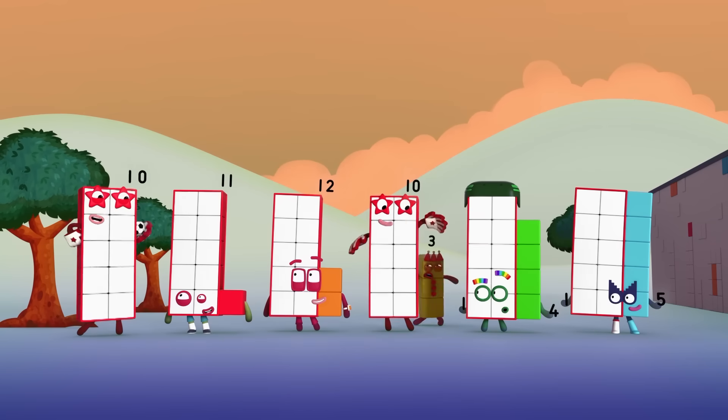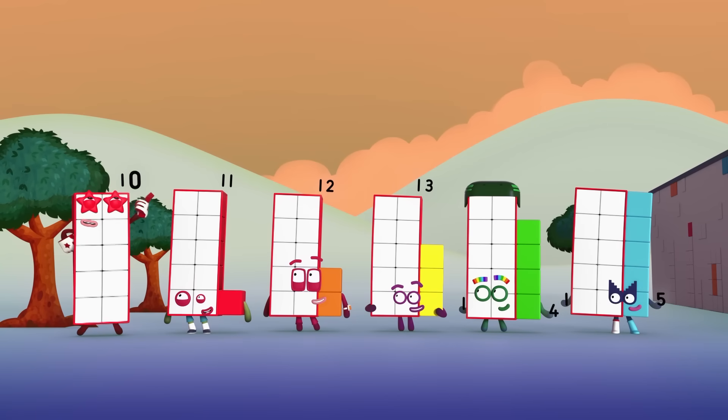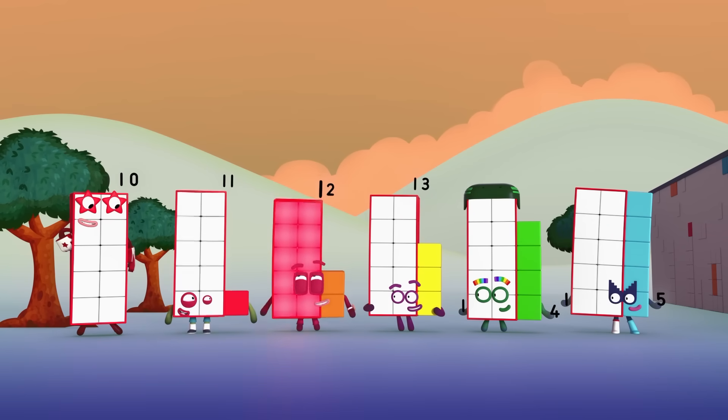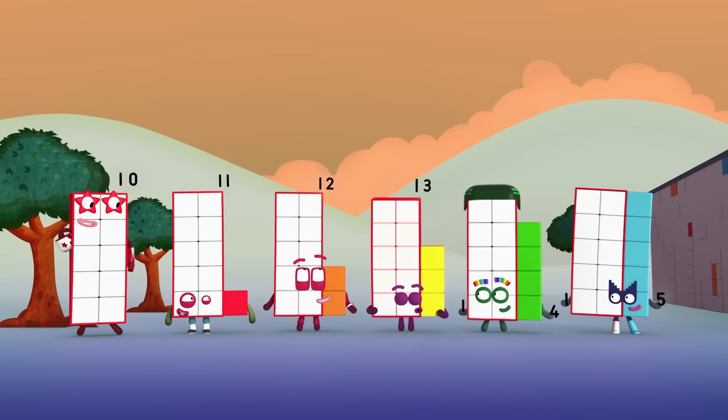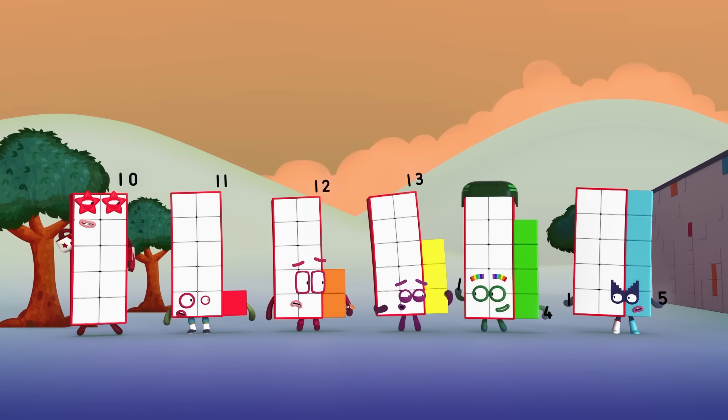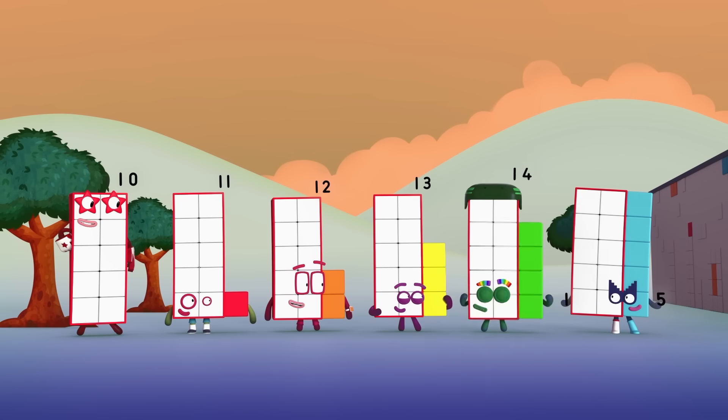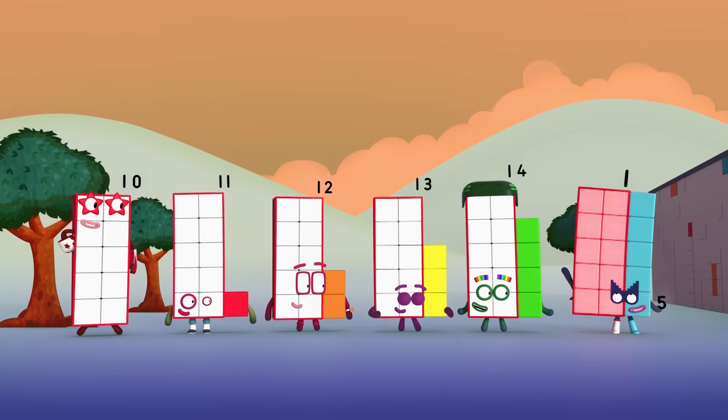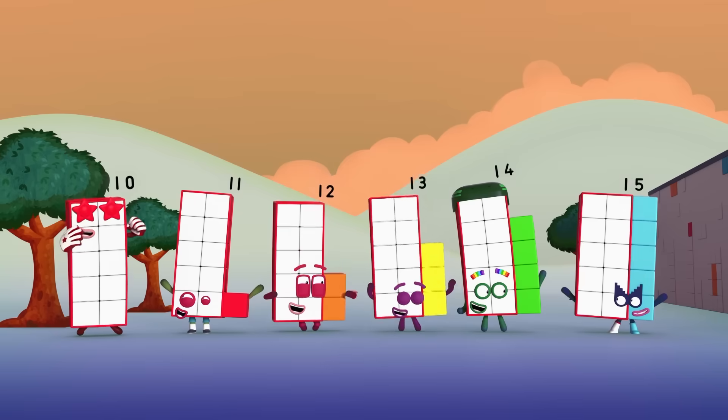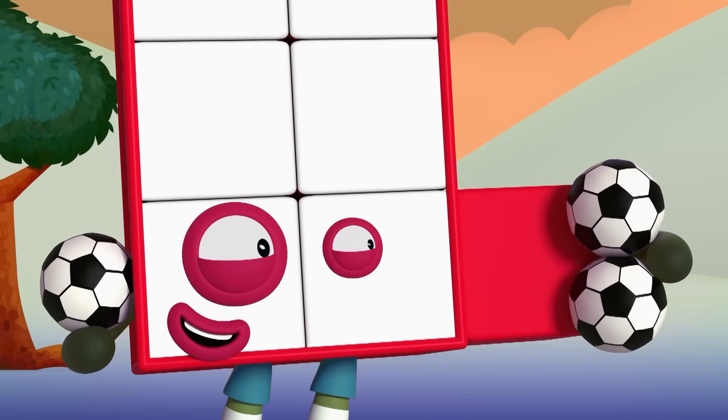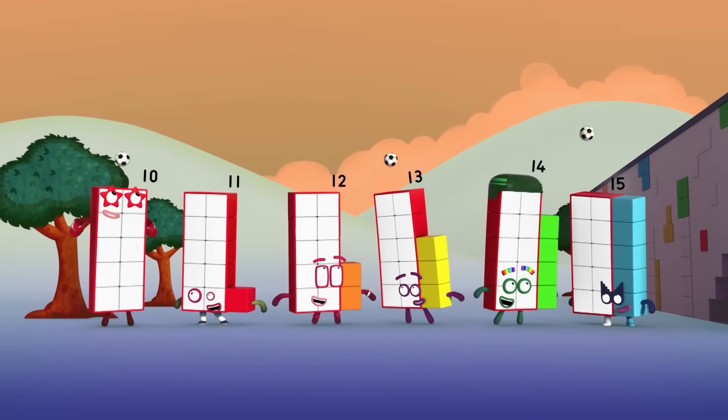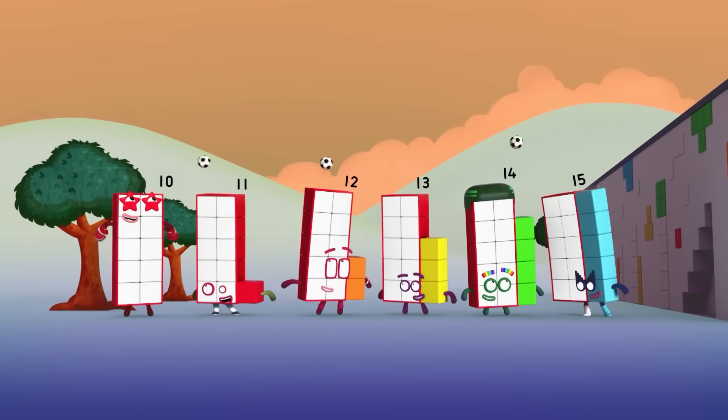Now, where were we? One ten and zero, ten. One ten and one, eleven. One ten and two, twelve. One ten and three, thirteen. One ten and four, fourteen. One ten and five, fifteen. Now we can play. Come on, everyone, on your heads. Good boy, Gary.